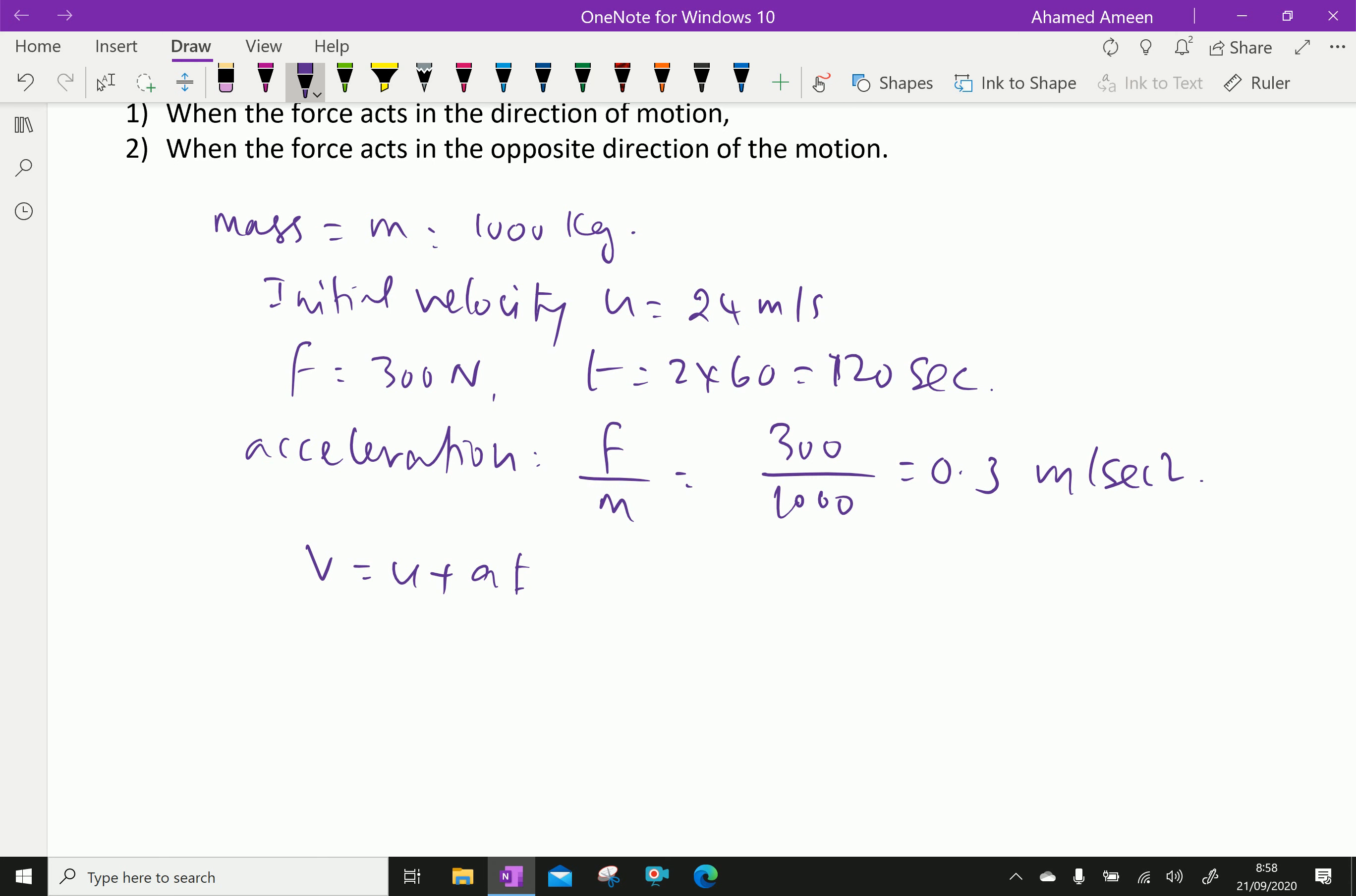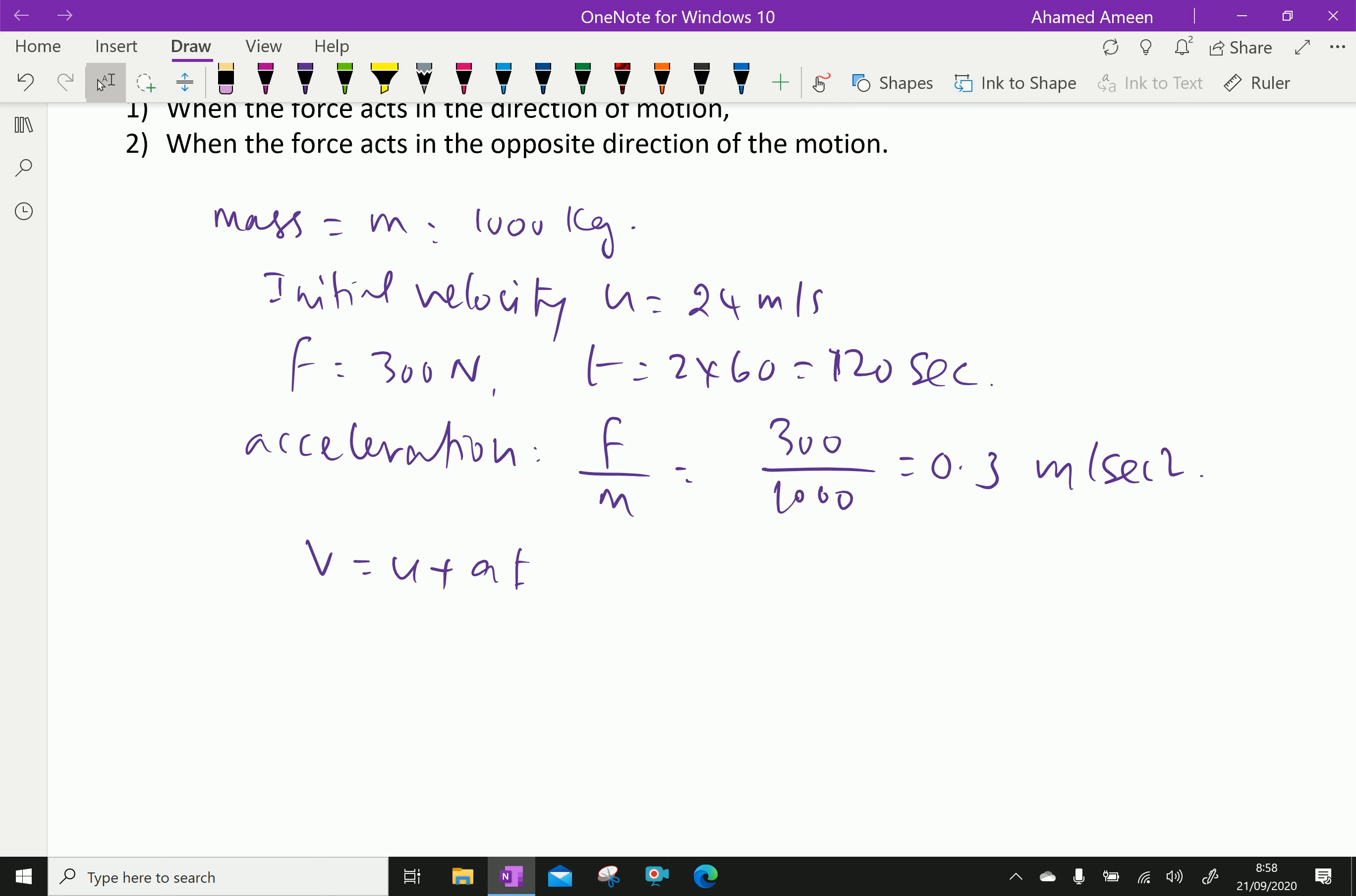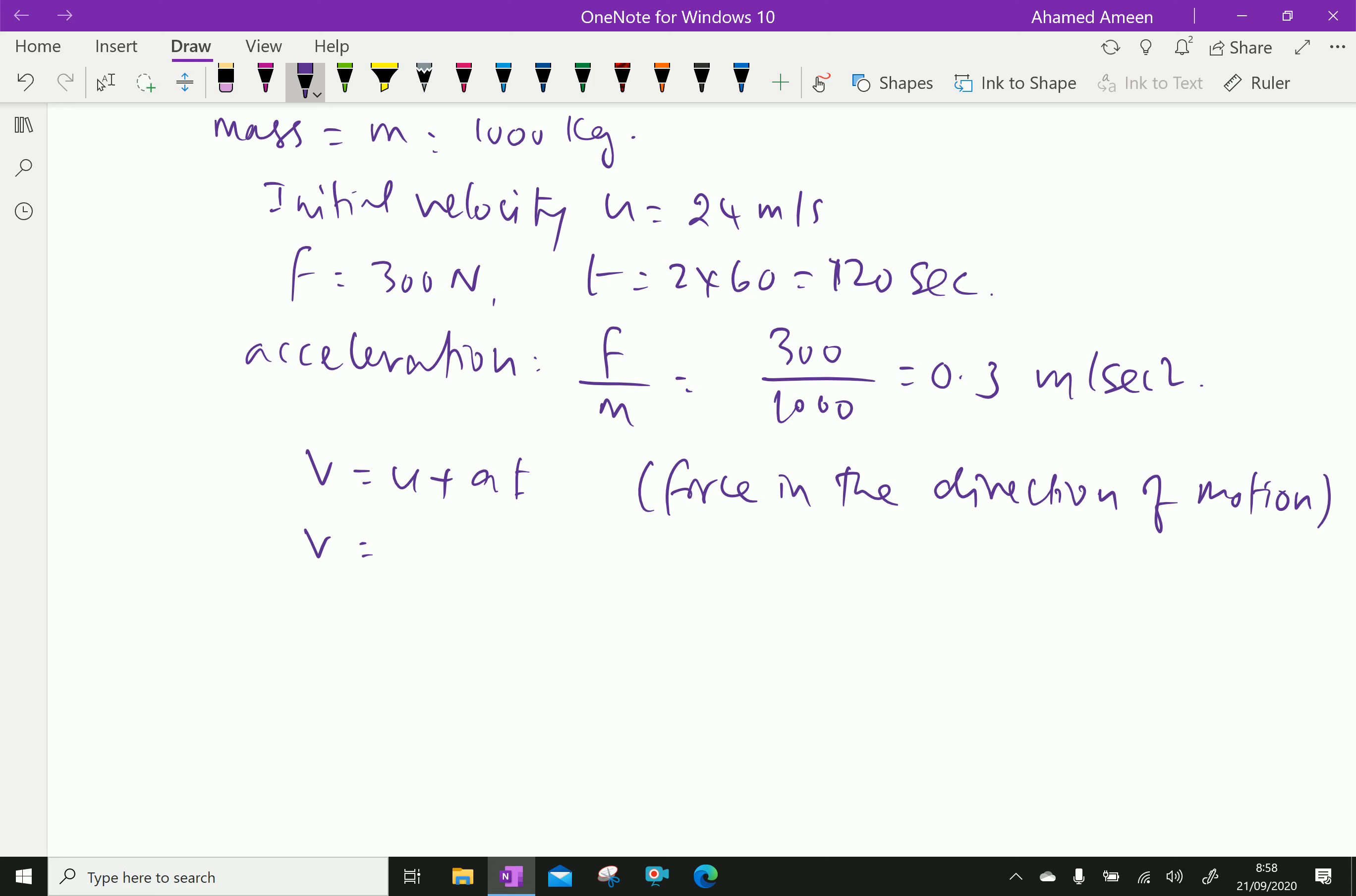When the force acts in the direction of motion, acceleration is positive. Therefore, final velocity V1 equals initial velocity 24 plus acceleration 0.3 into time 120, which gives 60 meter per second.